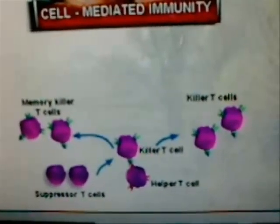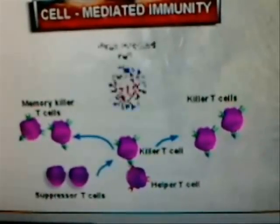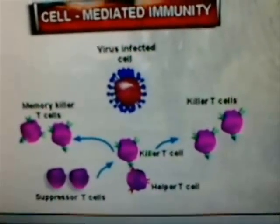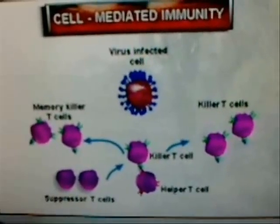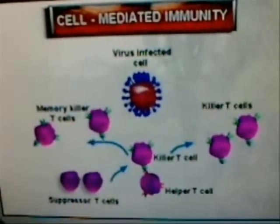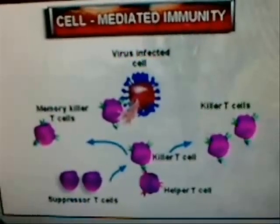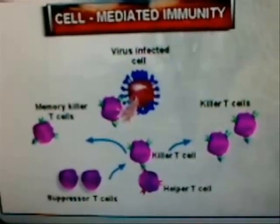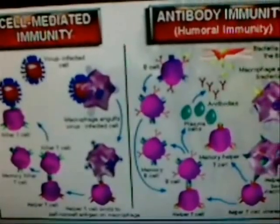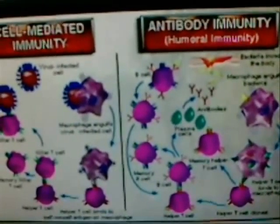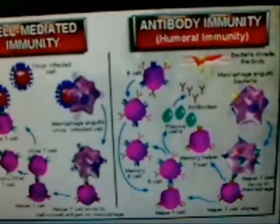If the same antigen happens to appear again, the memory T cells, just like the memory B cells, will direct a secondary immune response and quickly destroy the invader. This diagram compares and contrasts cell-mediated immunity with antibody immunity.